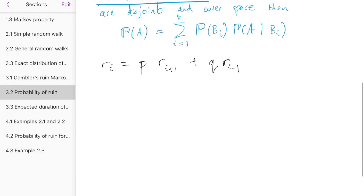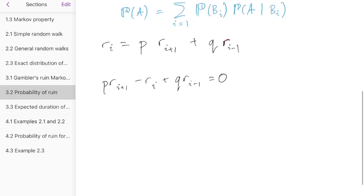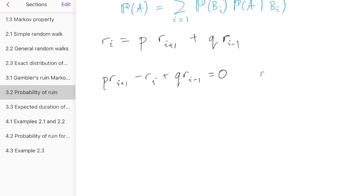We can rearrange that equation. It will be convenient to rearrange it so all the terms go on the left. So that would be P*R_{i+1} minus R_i plus Q*R_{i-1} equals 0. Putting all the terms on the left. And remember that earlier on up here, we said R_0 equals 1 and R_m equals 0. And those are some equations we've got.